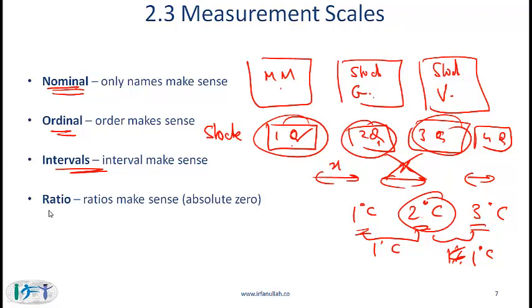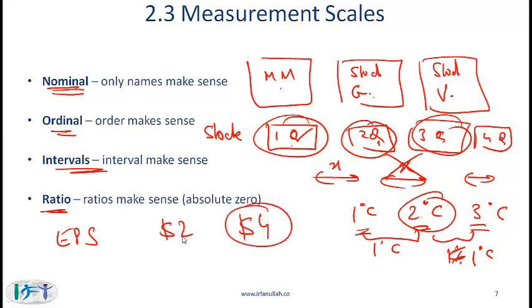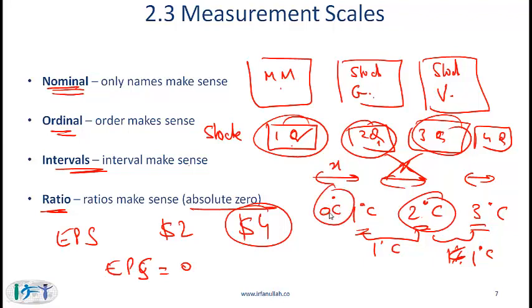The most precise measure is the ratio scale, where we have order, intervals make sense, and the ratio also makes sense. The classic example is earnings per share: if EPS is $2 in the first quarter and $4 in the second quarter, we can say earnings were two times more. With a ratio scale there is also an absolute zero — EPS of 0 actually means the absence of any earnings. Notice that with interval scales there generally won't be an absolute zero in the same sense; 0 degrees centigrade does not mean the absence of temperature.